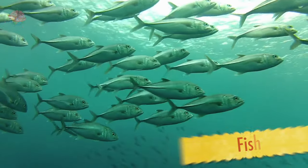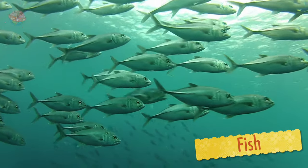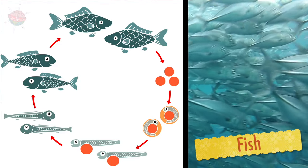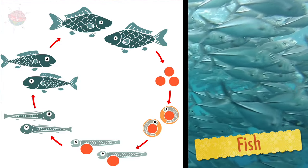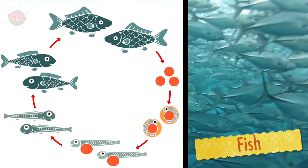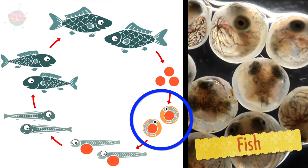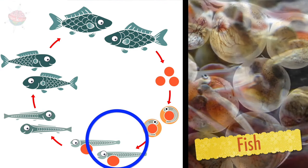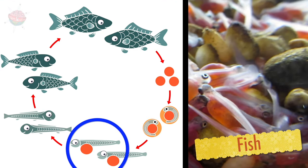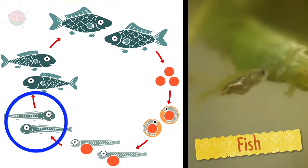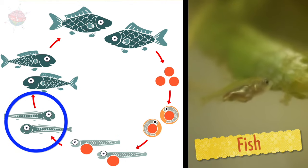Fish have a similar life cycle, with six different stages in life. They begin life as an egg, hatch into larva, then become a fry, where they can feed independently.